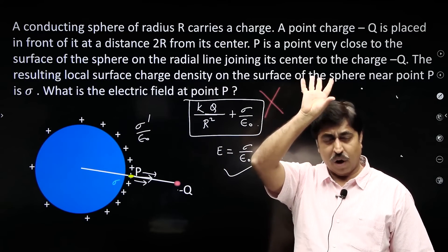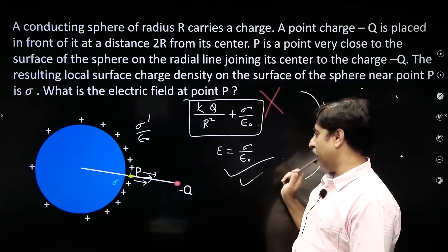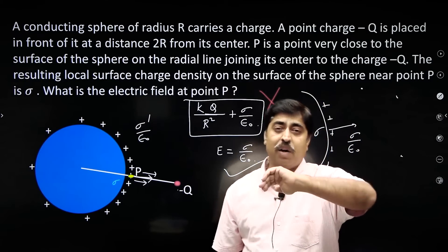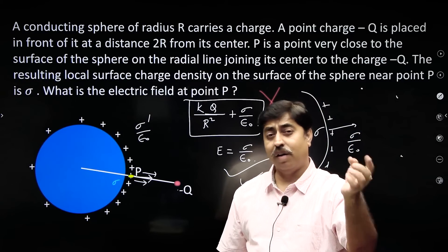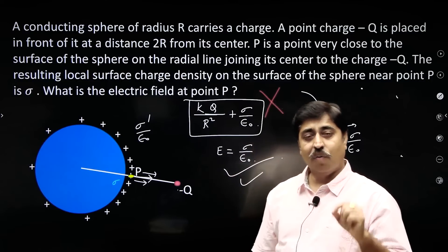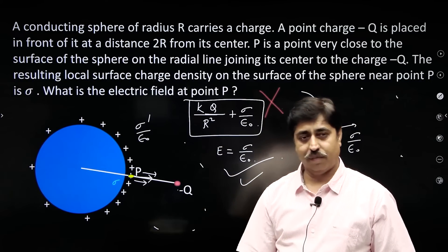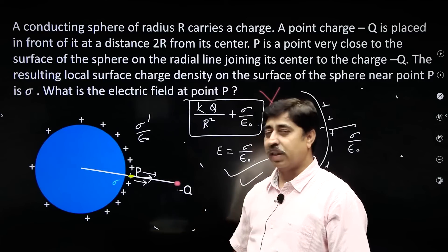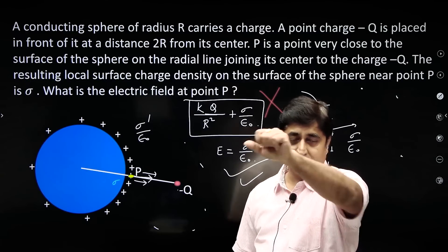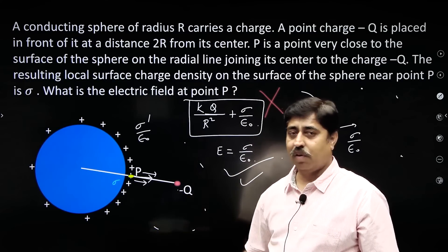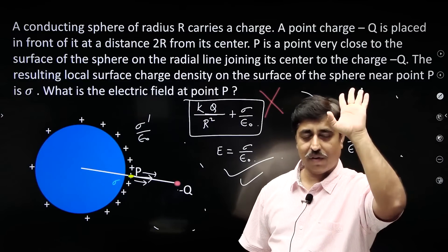If you have any doubt, go back to the derivation of this equation. You derived it using Gauss's law. Will the derivation be affected if there are many more charges out here? No — you are assuming that the charge density is sigma here in presence of all these charges, and your derivation is not going to get affected. Therefore, the field is sigma by epsilon naught.